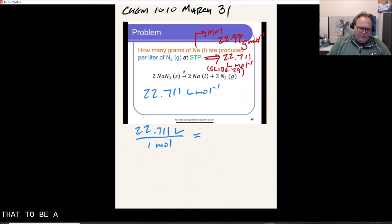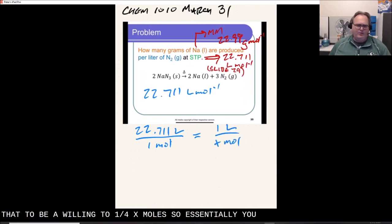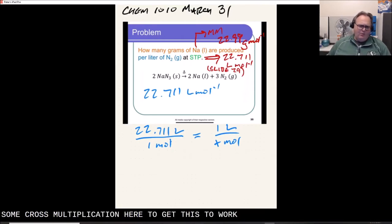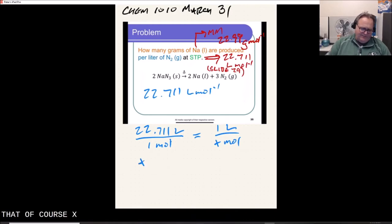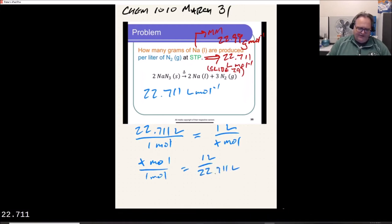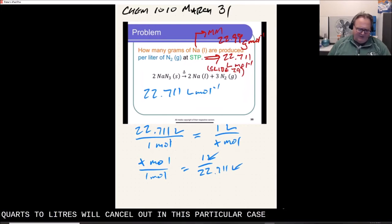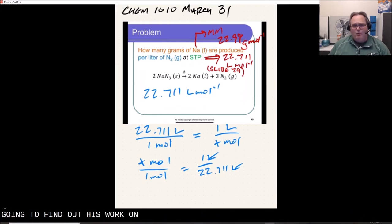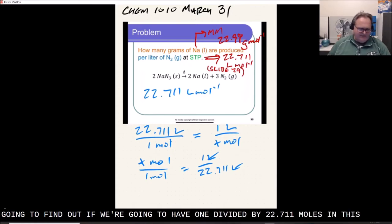But we want that to be equivalent to one liter for x moles. So essentially we see that we're going to do some cross multiplication here to get this to work. And what we're going to find is that, of course, x moles over one mole equals one liter divided by 22.711 liters. Of course the liters will cancel out in this particular case. And so really what we're going to find out is we're going to have one divided by 22.711 moles in this particular case.